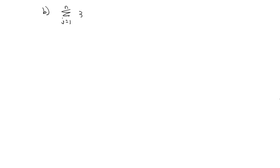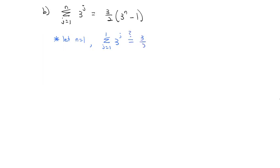Let's try another example. The sum as j goes from 1 to n of 3 to the j power equals 3 halves times 3 to the n minus 1. Let's start with the base case: let n equal 1. That gives us the sum as j goes from 1 to 1 of 3 to the j. We want to know: does that equal 3 halves times 3 to the first minus 1? On the left side, we just get 3 to the first. On the right side, 3 halves times 3 minus 1 is 2, so 3 halves times 2 equals 3. Sure enough, 3 equals 3 — the base case works.